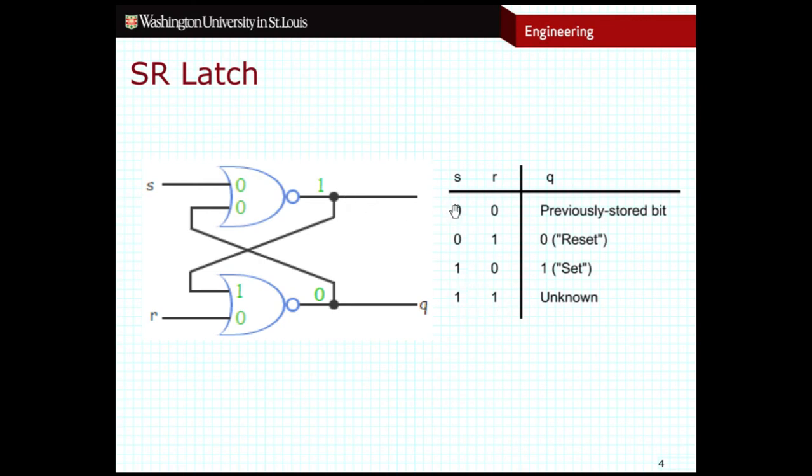And so then what happens if I go to this 0, 0 state from there? So now they both go down to 0. What happens? Well, the inputs to all of these NOR gates are now 0, which means the outputs will be 1. But when the output travels back through the cross-coupling back to the inputs,